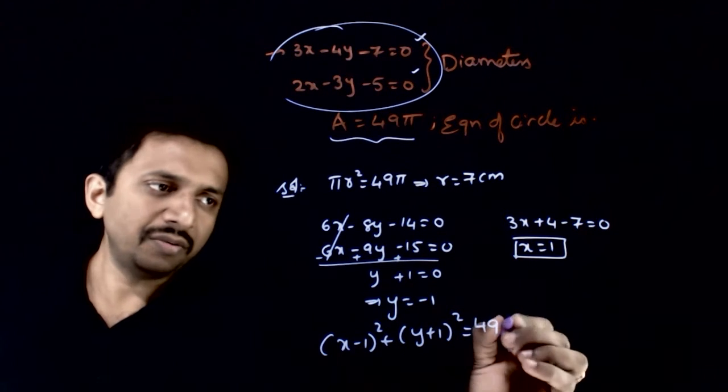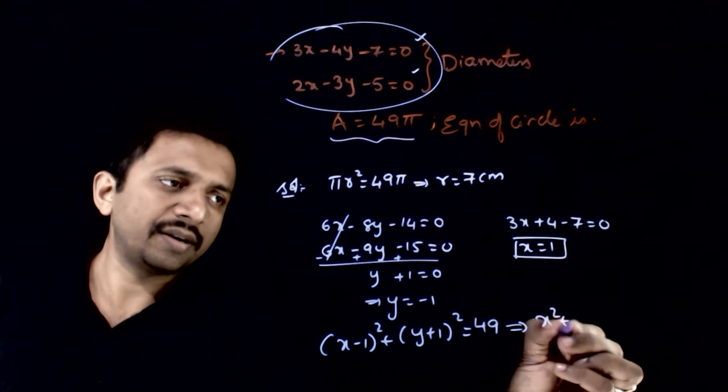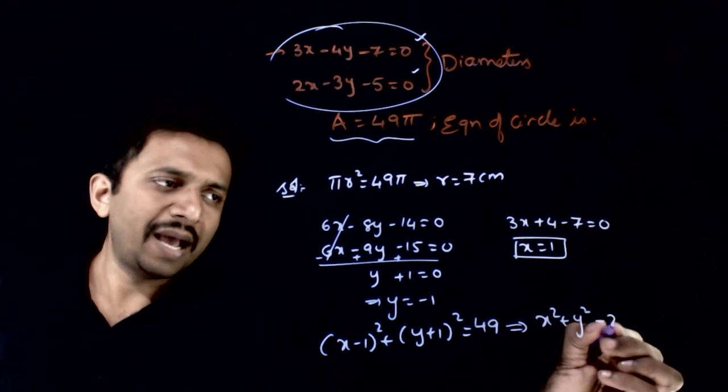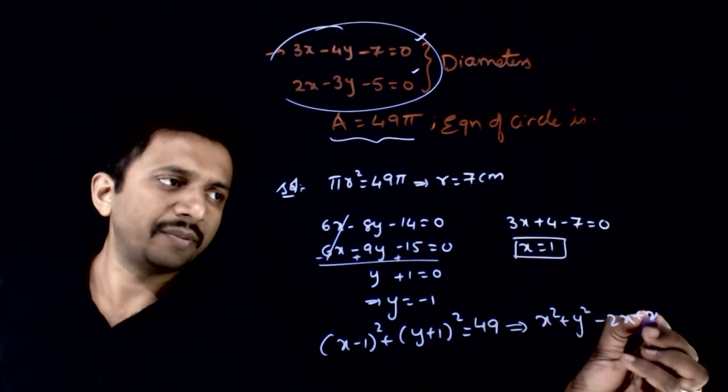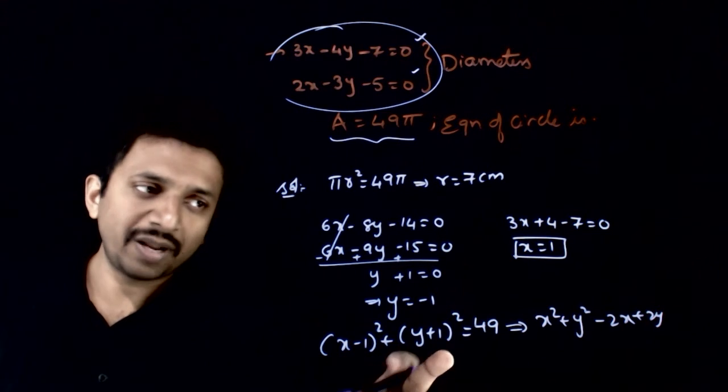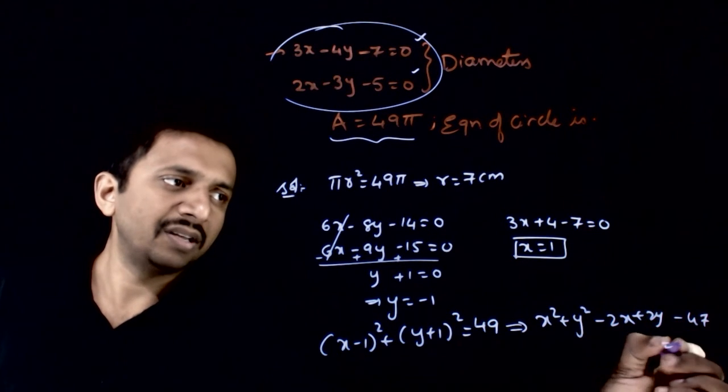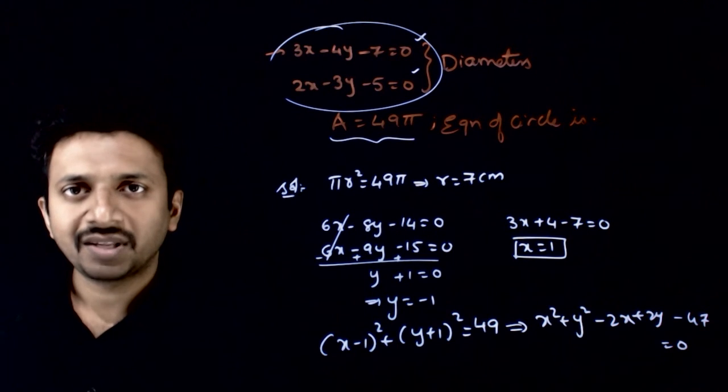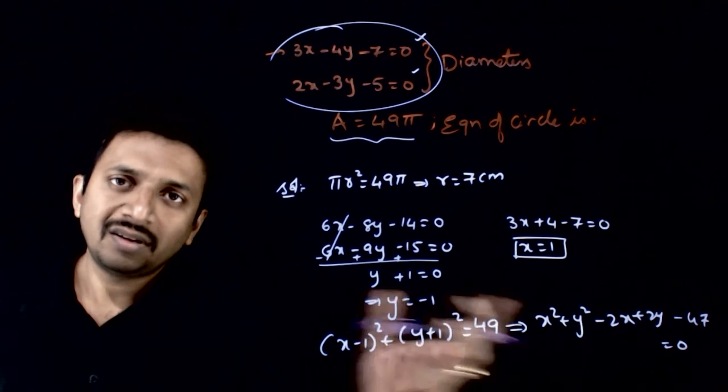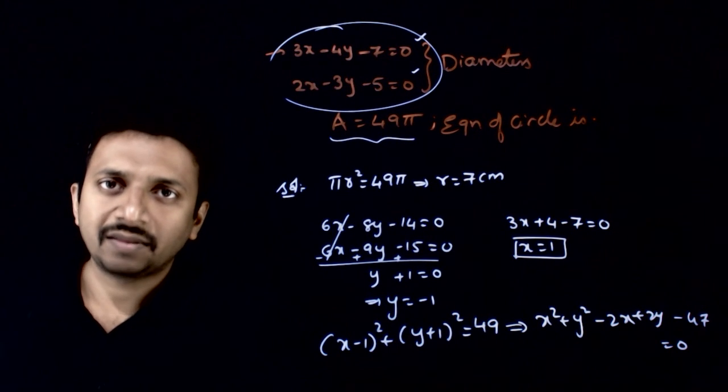You can expand this equation also. You get x² + y² - 2x + 2y + 1 + 1 + 2 - 49, that is -47 = 0. This can be the equation of the required circle. Thank you.